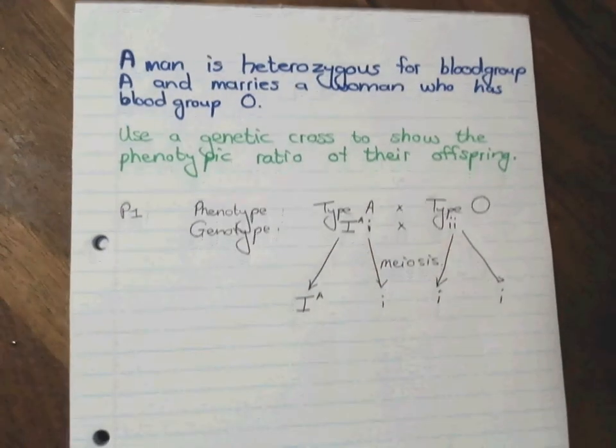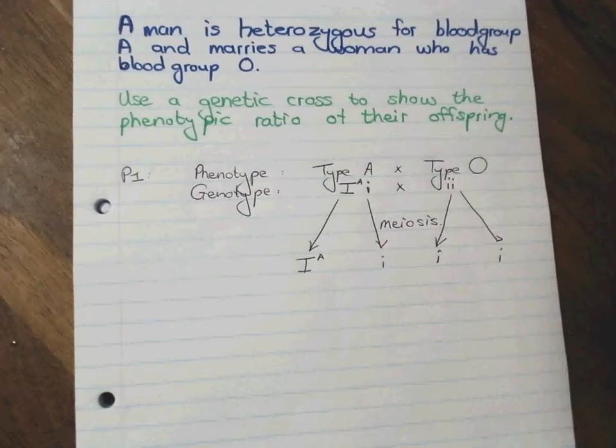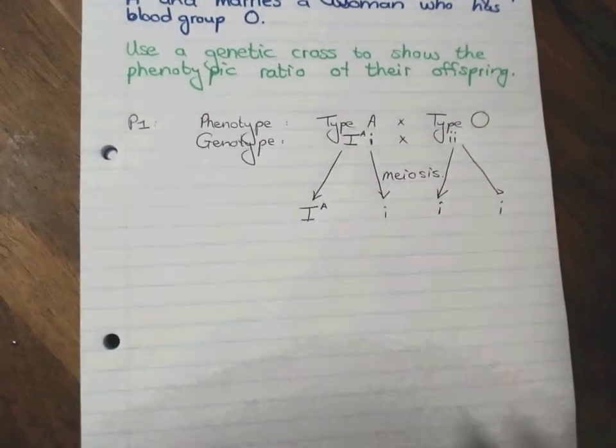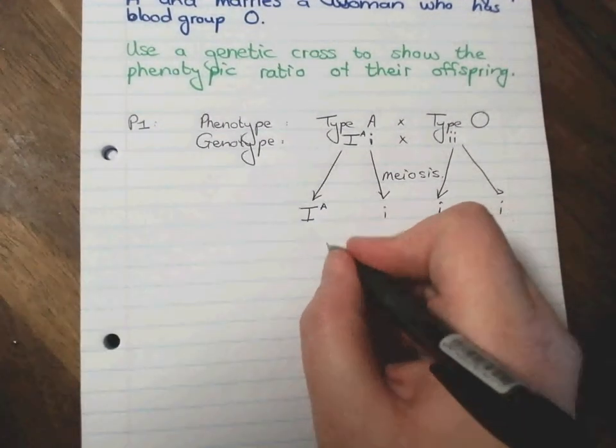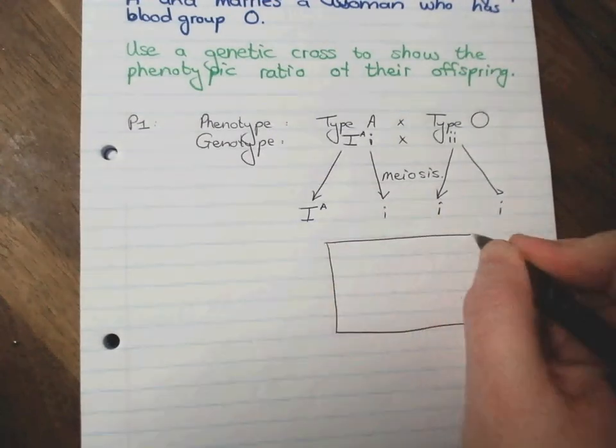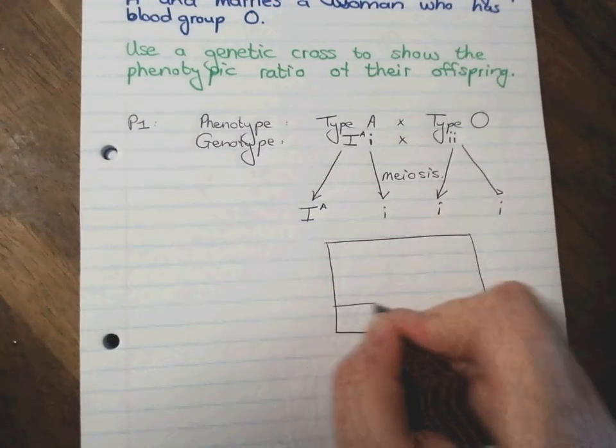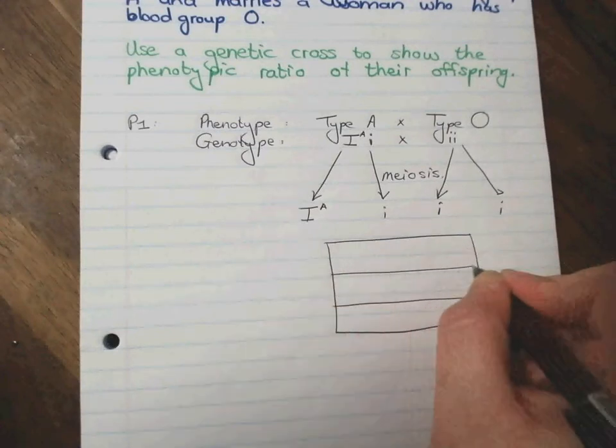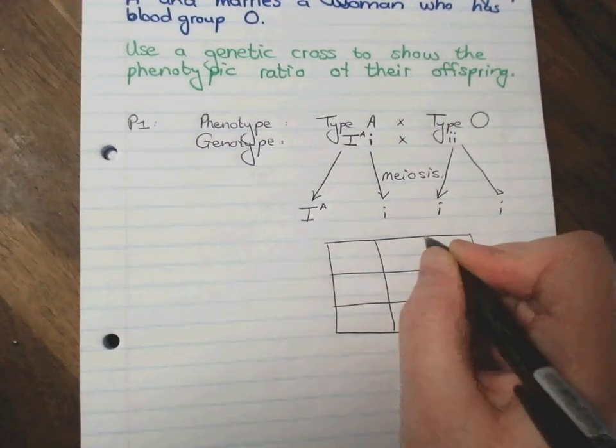Okay, now that we have the alleles now in the gametes, now we can draw a Punnett diagram, which I'm going to be drawing freehand. But you are going to do everybody in the exam a favor and draw this using a ruler, please.